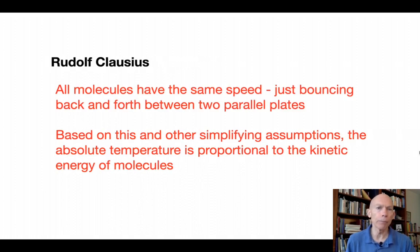So Clausius started off looking at this and he said that all molecules have the same speed. This was his assumption. He knew that they had different speeds, but for mathematical simplicity this was his assumption. And they were just bouncing back and forth between two parallel plates. Based on this and other simplifying assumptions, he found that the absolute temperature of the gas is proportional to the kinetic energy of the molecules.